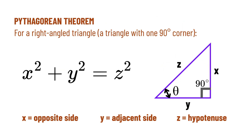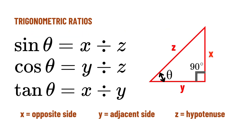In any right-angled triangle, the sides are connected by the Pythagorean theorem: x² + y² = z². Also, we can write down the trigonometric relationships: sin θ = x/z, cos θ = y/z, and tan θ = x/y.